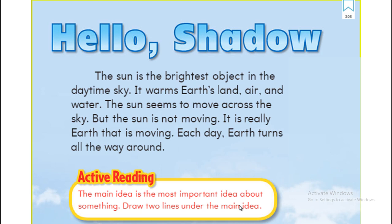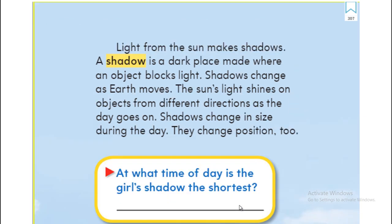The Sun is the brightest object in the sky and it warms the Earth, land, air, and water. The Sun seems to move across the sky, but the Sun is not moving — it is really the Earth that is moving. Each day the Earth turns all the way around. Light from the Sun makes shadows. A shadow is a dark place made when an object blocks the light, and shadows change as the Earth moves.